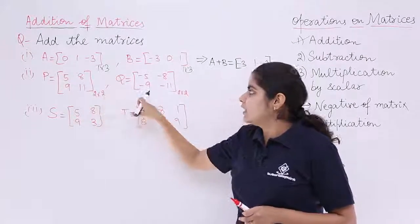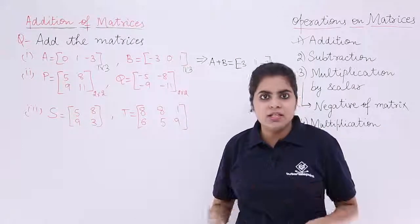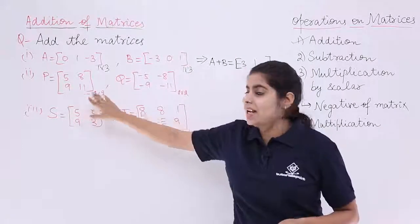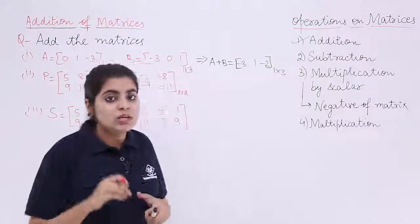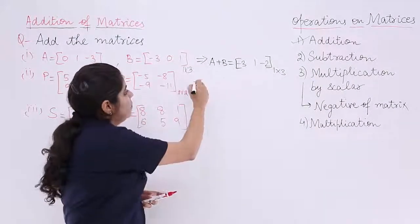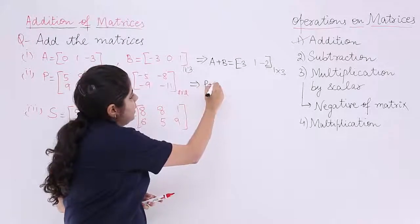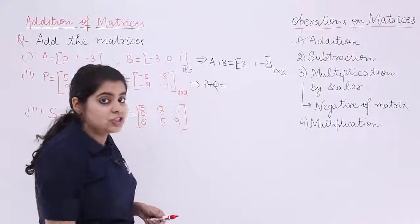Here it is 9, here it is minus 9. Add together 9 minus 9 again 0. Here it is 11, here it is minus 11. Again adding gives me 0. So, basically I have the matrix P plus Q wherein each element is 0.